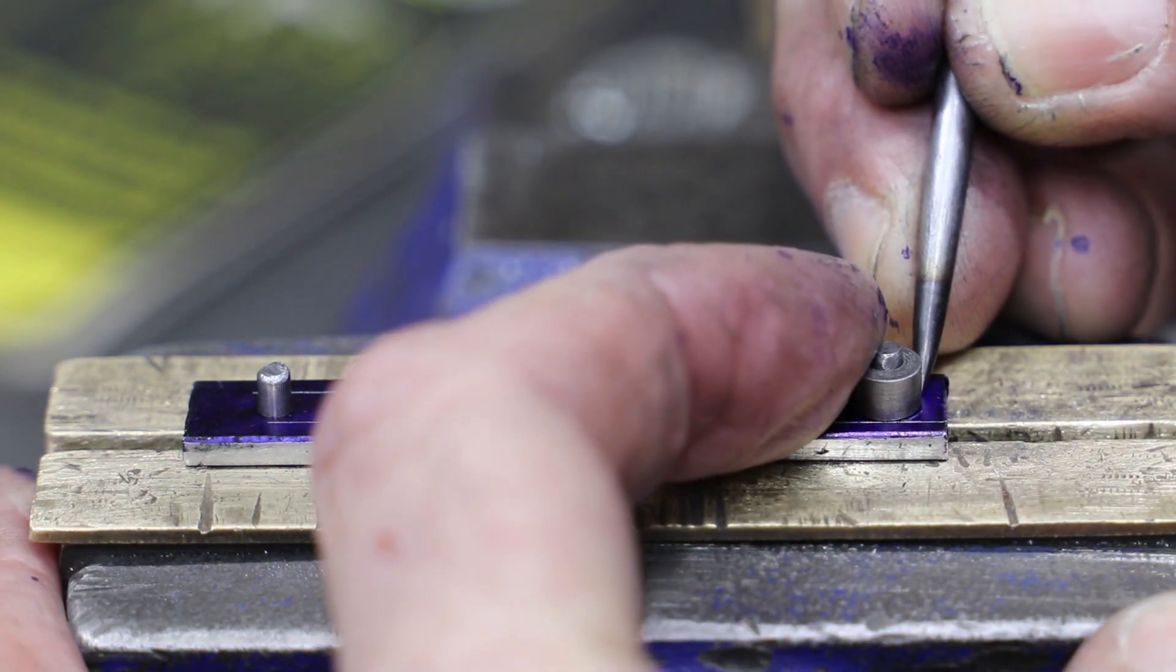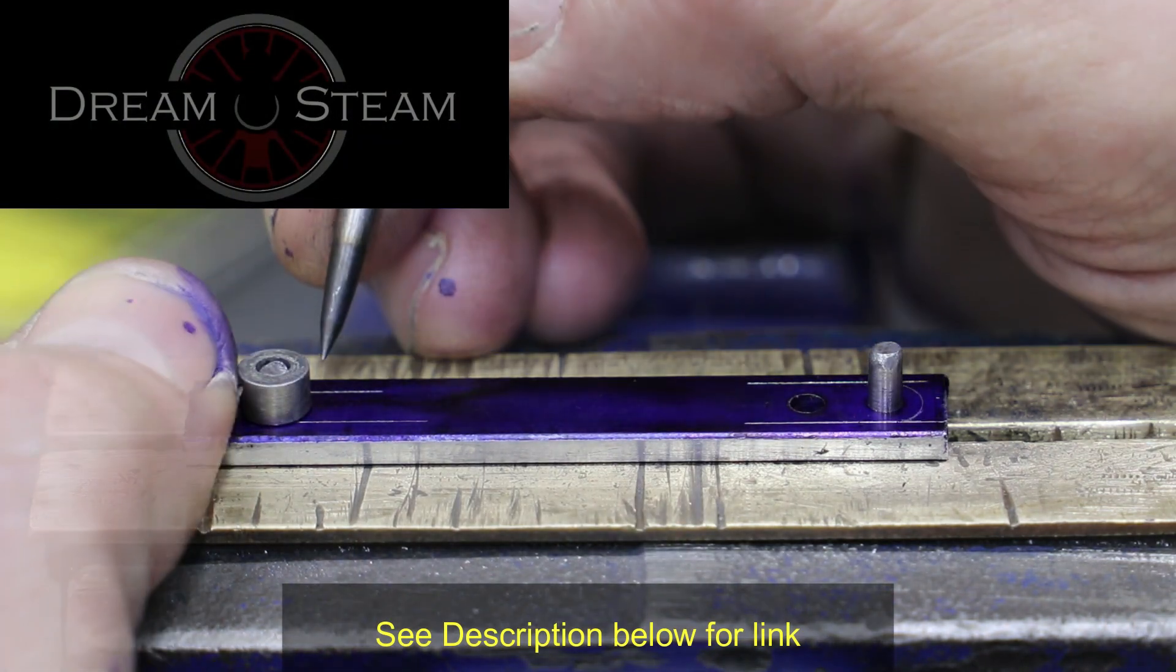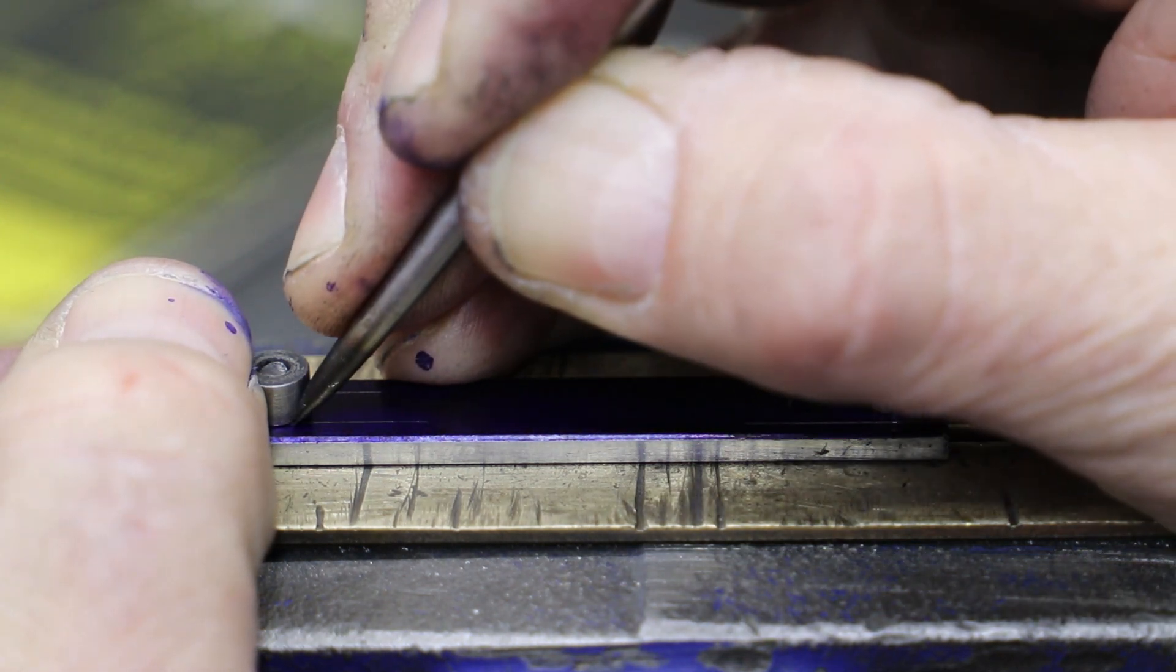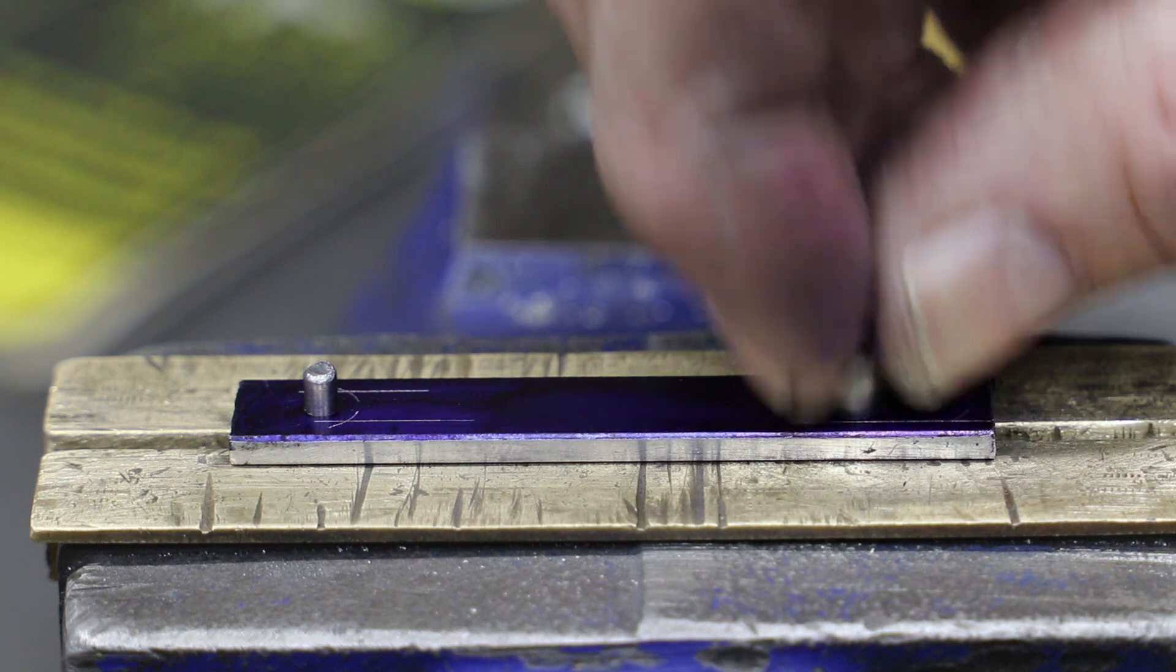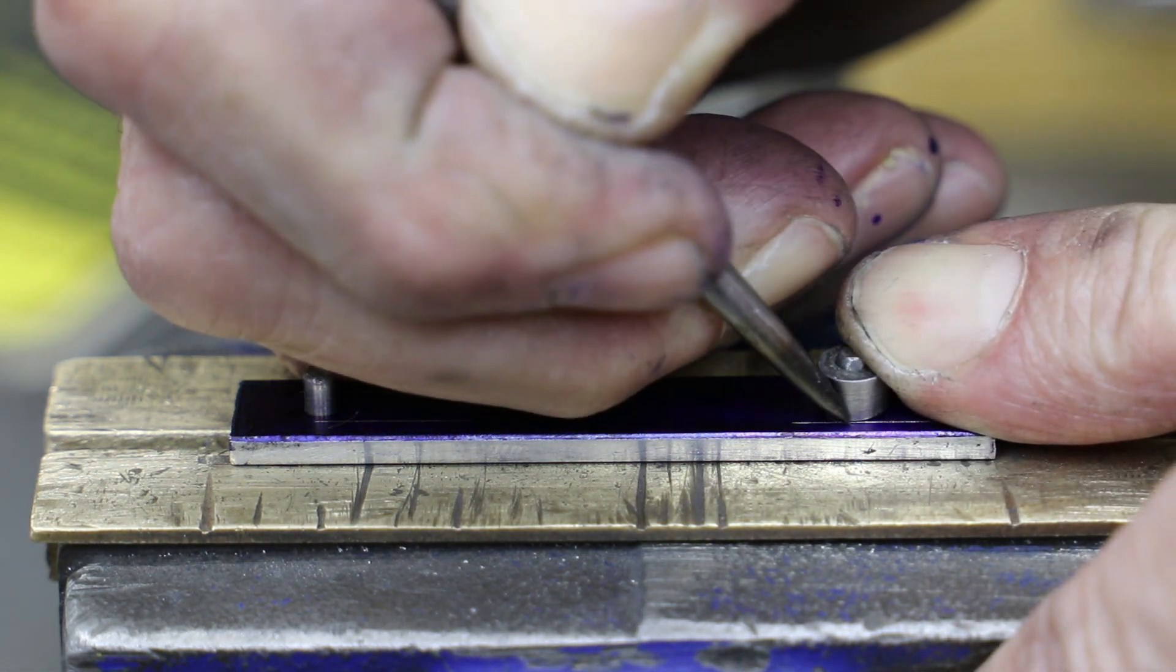But inspired by the amazing work done by Chris over at Dreamsteam, I'm going to take a different approach this time around, and cut the profile the good old fashioned way, using just a hacksaw and my files. First off I mark out the outline on one piece, and I use my little filing buttons for the rounded ends.